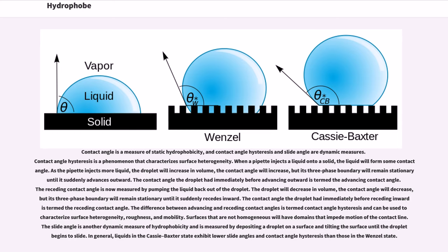Surfaces that are not homogeneous will have domains that impede motion of the contact line. The slide angle is another dynamic measure of hydrophobicity and is measured by depositing a droplet on a surface and tilting the surface until the droplet begins to slide. In general, liquids in the Cassie-Baxter state exhibit lower slide angles and contact angle hysteresis than those in the Wenzel state.